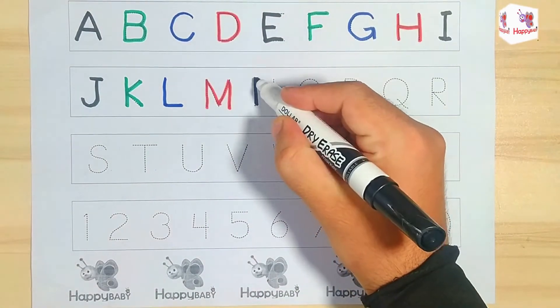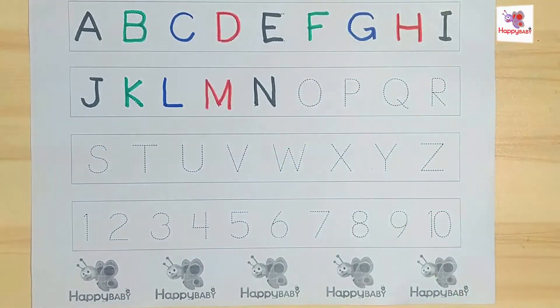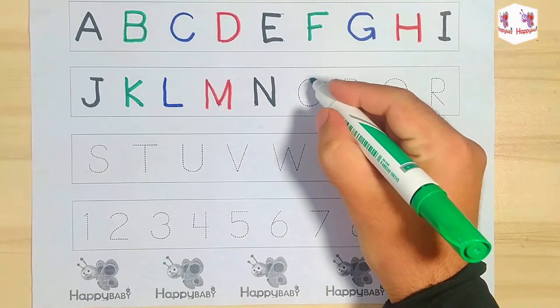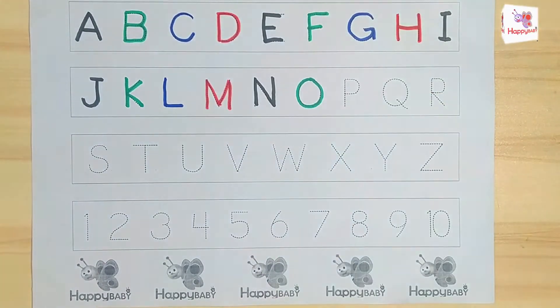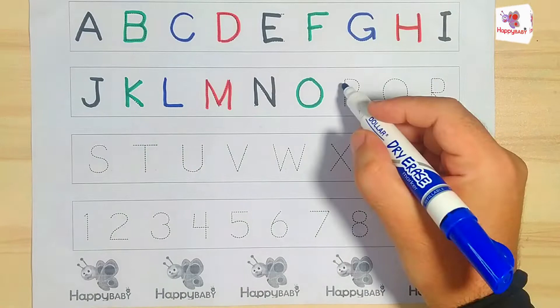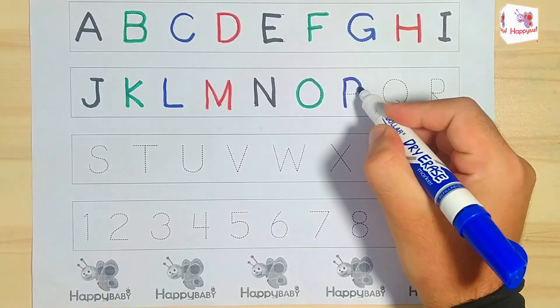N. N for nest. O. O for orange. P. P for peacock.